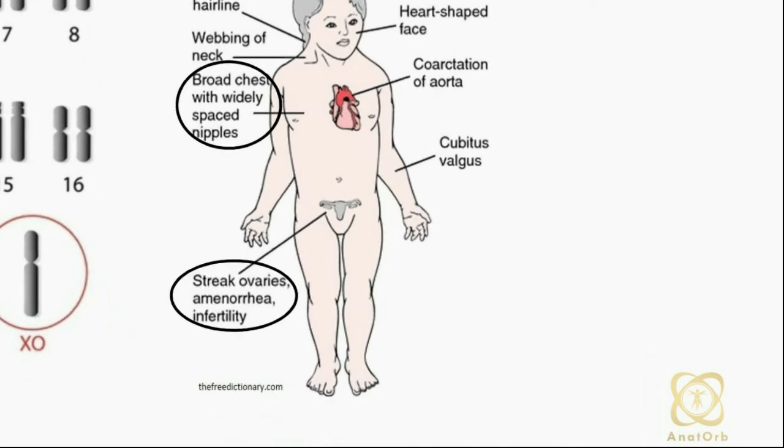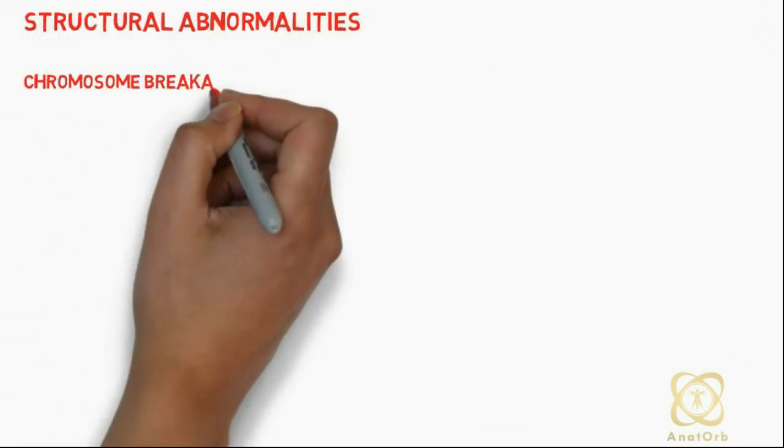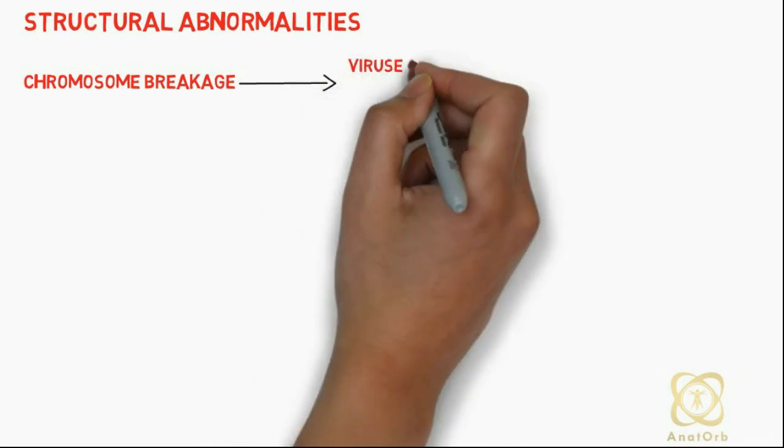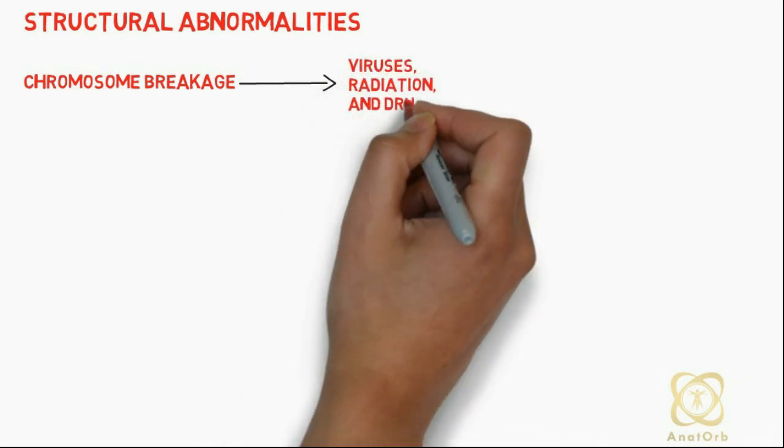Let's talk about structural abnormalities. Structural abnormalities usually result from chromosome breakage caused by environmental factors such as viruses, radiation, and drugs.